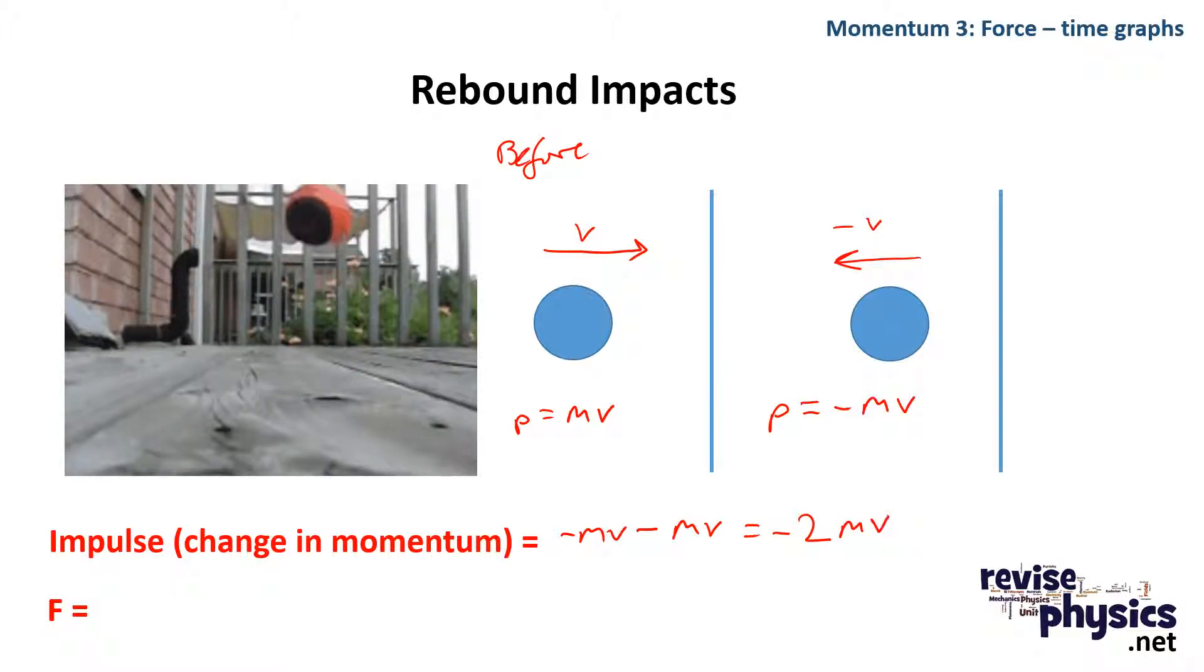So the force that that ball experiences as it bounces off the wall is going to be equal to 2mv divided by the time over which you get that change in momentum. And this is always the case for rebounds. The magnitude of the direction of the change of its momentum is 2mv.